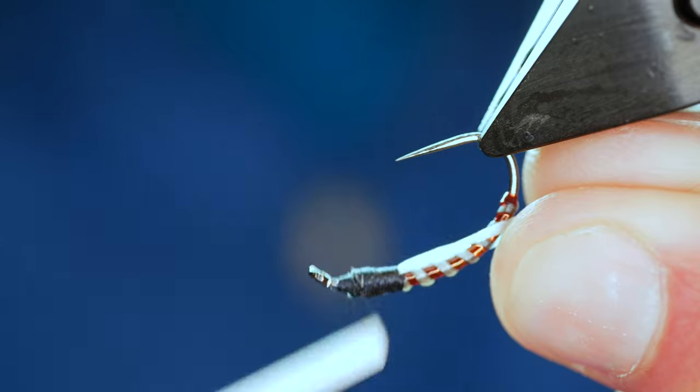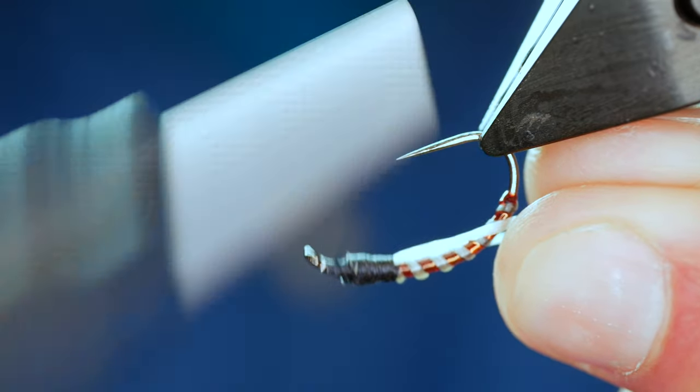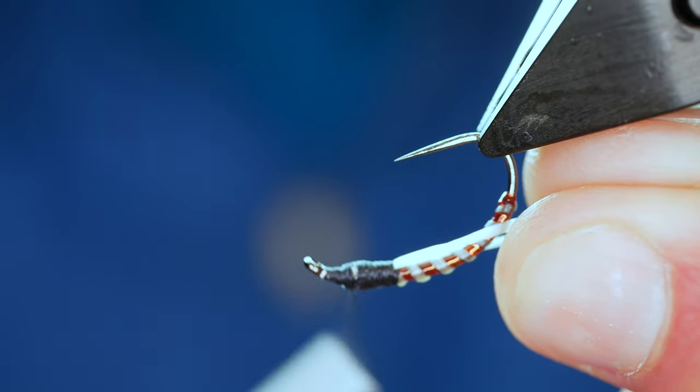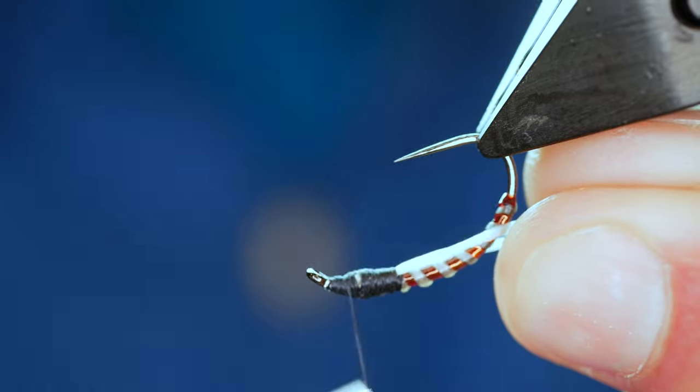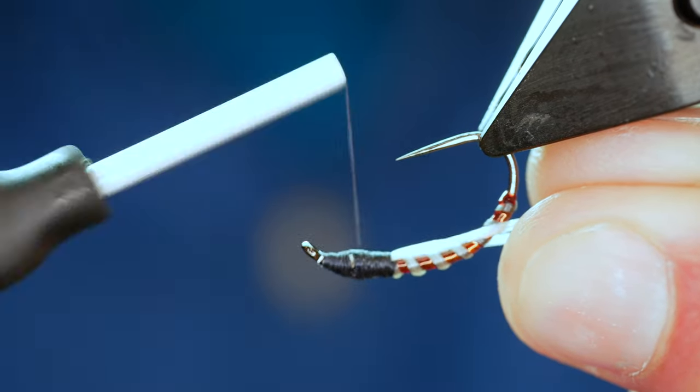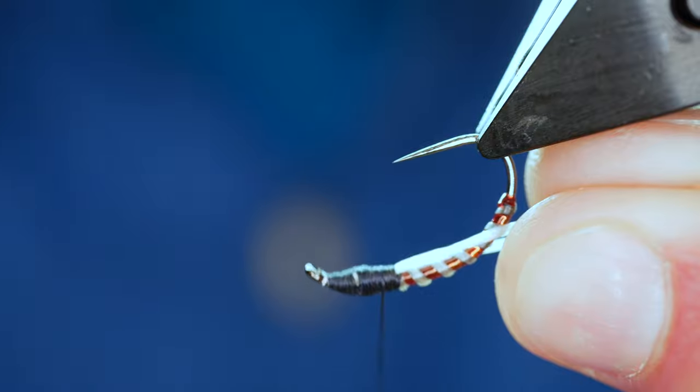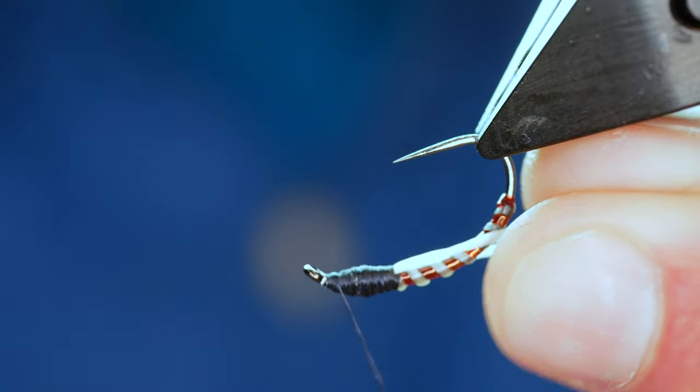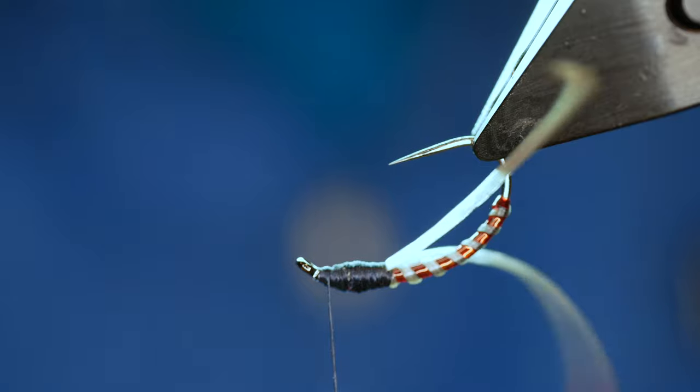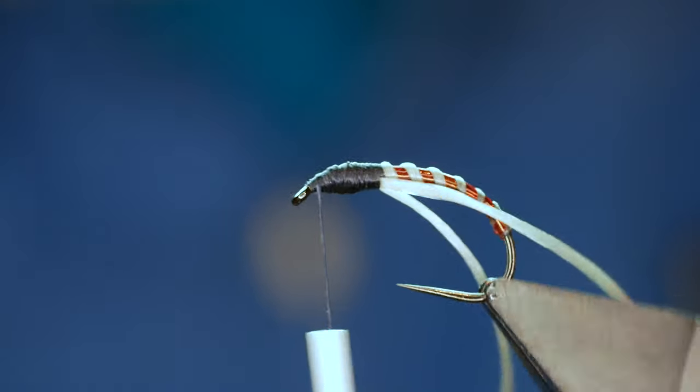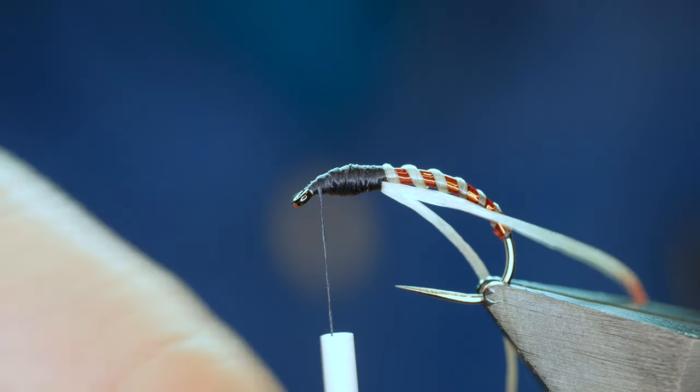So I'm going to come in with my thread all the way back to the start of my thorax. Just make sure that I've hidden all that flexi floss with my thread. Don't want a big bulbous thorax really. So I'm going to stop there, bring my vice back around to the front.